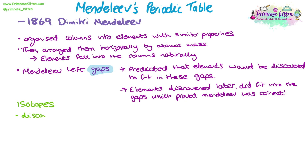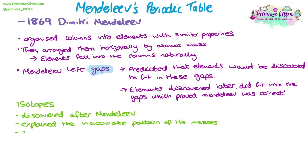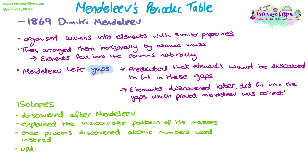Isotopes were only discovered after Mendeleev had died. Because isotopes have a varying mass number, this explains some inaccuracies where Mendeleev had used mass number to order elements. When protons were discovered, atomic number took over as the basis for ordering elements, which fixed issues caused by isotopes. Mendeleev's basic periodic table has been updated many times over the years, but the updated version based on his drafts still fits the predictions he made at the time.